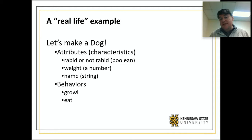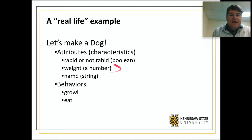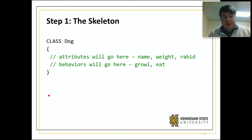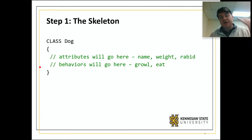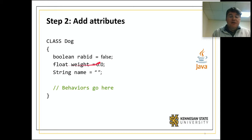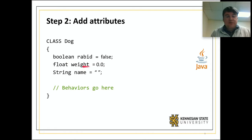So how do we go about making a dog? Let's talk about some attributes we're going to assign. We might have whether the dog is rabid or not, we have a weight which is how heavy the dog is, and we have a name because all dogs are going to have a name. Dogs are going to be able to growl and eat. Back to our skeleton of class dog — attributes are typically listed at the top, and then all of your methods, which are your behaviors, go below the attributes. We'll start with a boolean rabid, setting default to false because most dogs do not start off life as rabid. Then we have weight set to 0.0 and name set to an empty string. This is in Java — the only reason is because the word boolean is spelled out and String has a capital S.